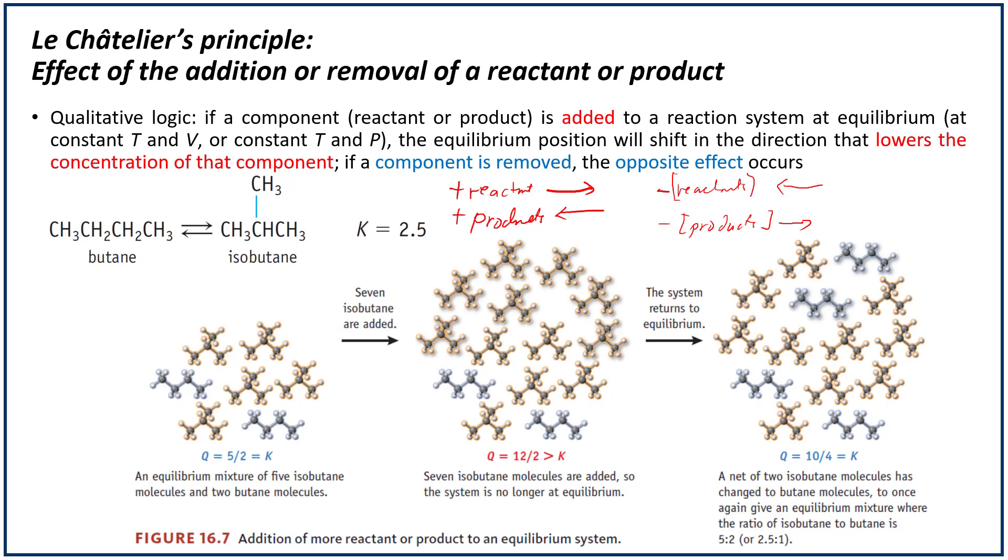One good way to illustrate this will be this reaction between butane being converted into isobutane. In this system at equilibrium, you have a total of five isobutane molecules, the one in yellow, and two butane molecules. Let's say we disrupt the equilibrium, and to the system, added seven molecules of isobutane. So the system here in the middle is not in equilibrium anymore. We have here a Q value not equal to K. In fact, Q here is greater than K.